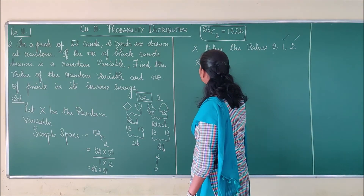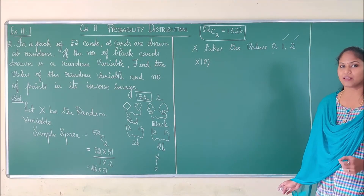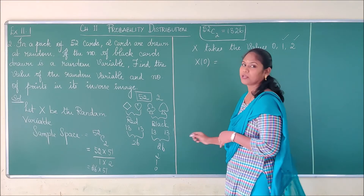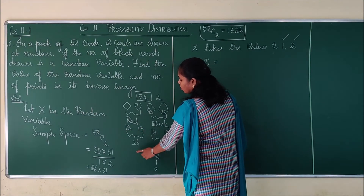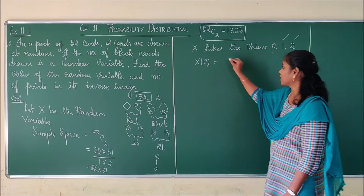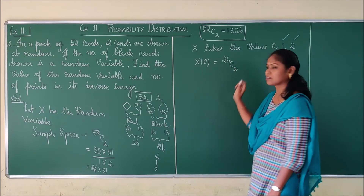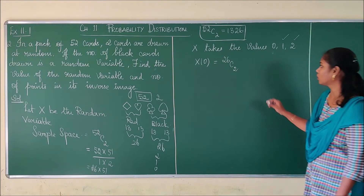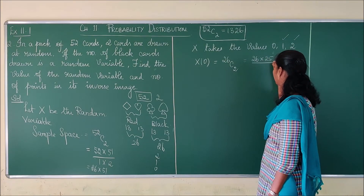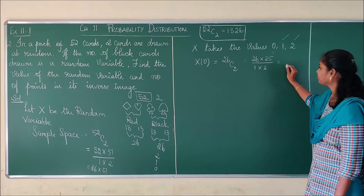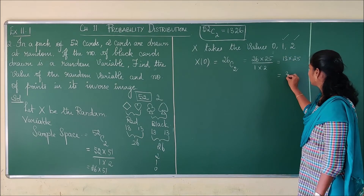First we find the inverse image for x = 0. Since x = 0 means no black cards, we take 2 cards from the 26 red cards. This can be done as 26C2 = 26 × 25 divided by 1 × 2, which is 13 × 25 = 325. So the number of points in the inverse image of x = 0 is 325.